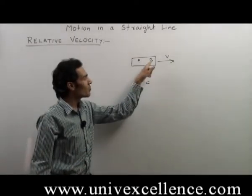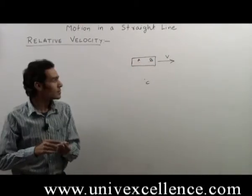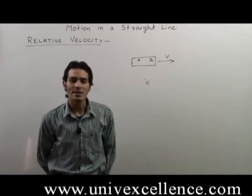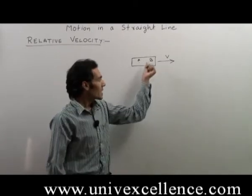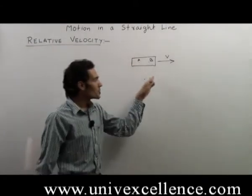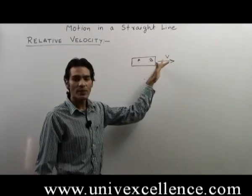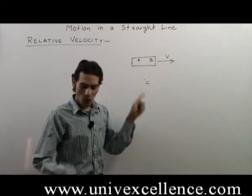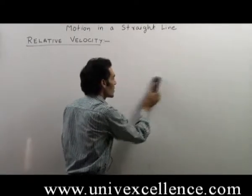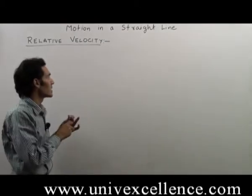With respect to C, B is in motion, but with respect to A, B is at rest. So an object can be at rest or can be in motion at the same time, but for different observers. Motion depends on the observer. Motion of a system depends on its initial and final position with respect to an observer. While describing motion or rest, we treat these terms as relative to each other.